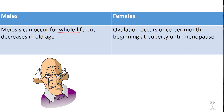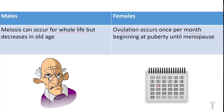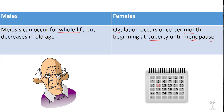In females, ovulation occurs once per month from puberty until menopause. Menopause usually occurs in the early to mid 50s, after which no more eggs are ovulated and pregnancy is no longer possible.